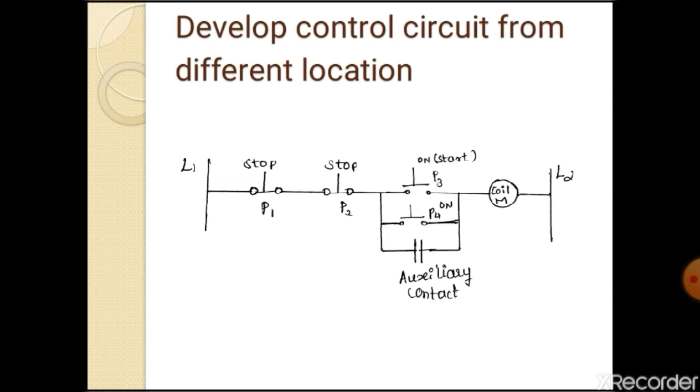So the motor starts running. After coil is energized holding contact will close and current flows. The running motor can be stopped by pushing off push button P1 and P2. When any push button is pressed coil is de-energized so that main contact gets open and motor stops.